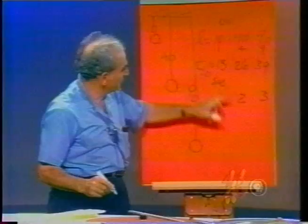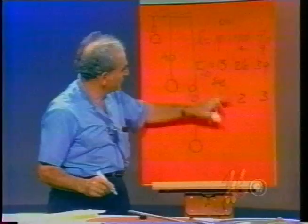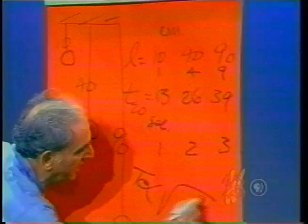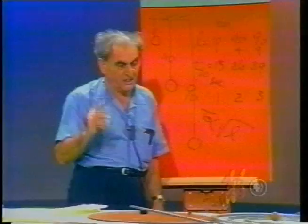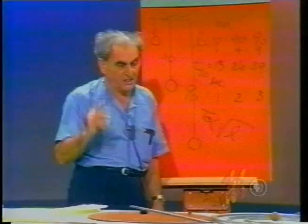A marvelous thing is encountered: 1 is the square root of 1, 2 is the square root of 4, and 3 is the square root of 9. That is exactly what the formula says — the period is proportional to the square root of the length. The rest of the expression comes out of some mathematical gymnastics.